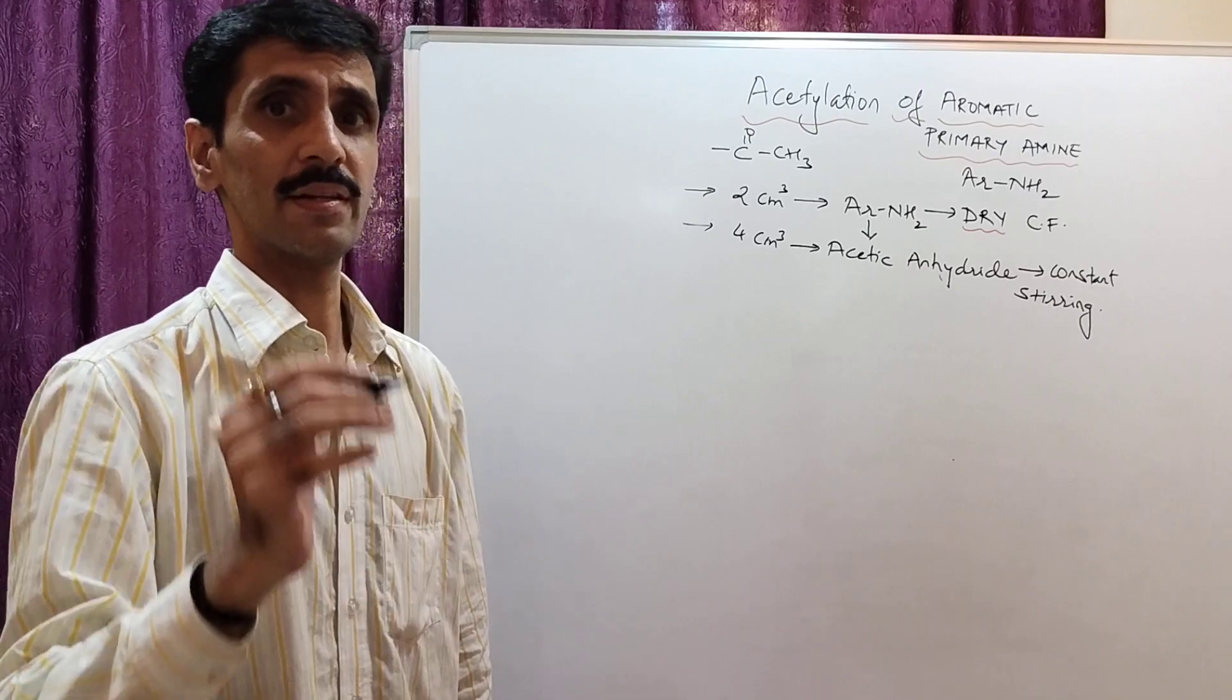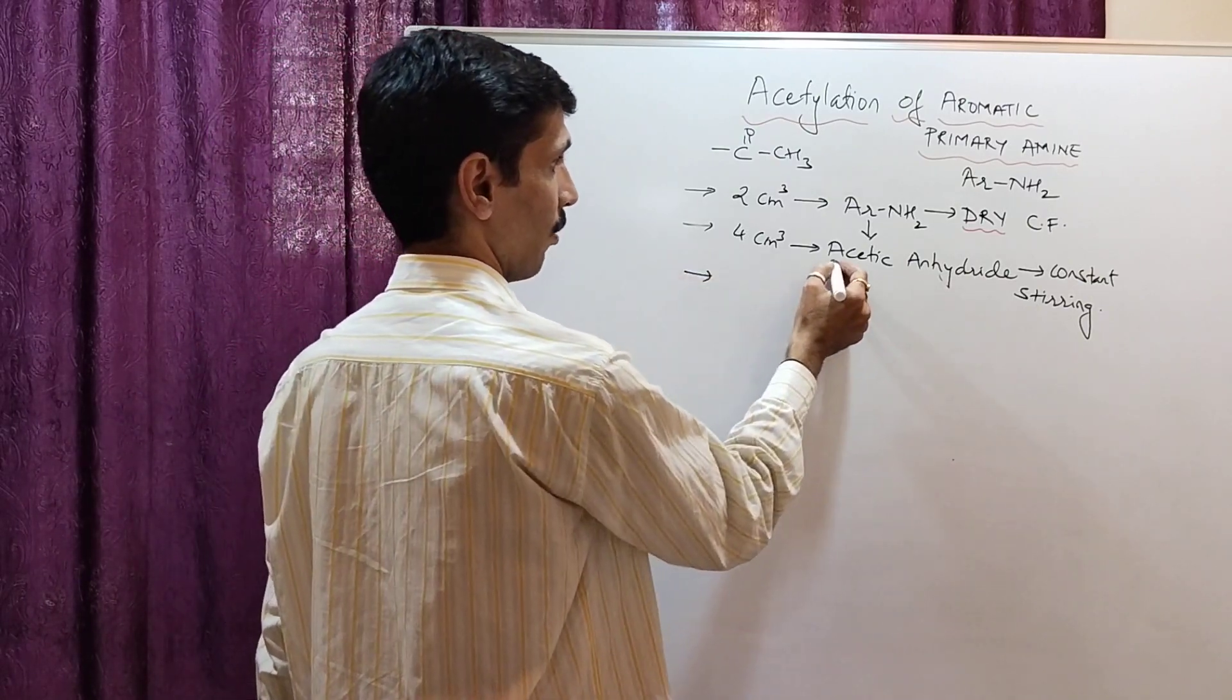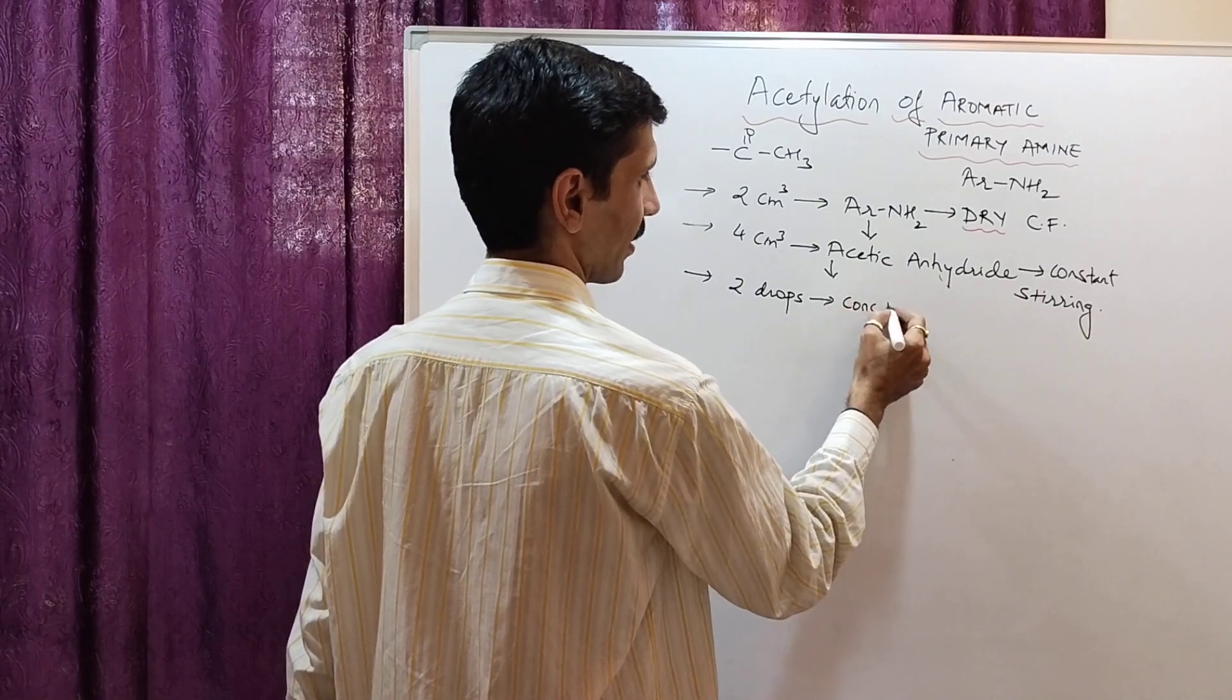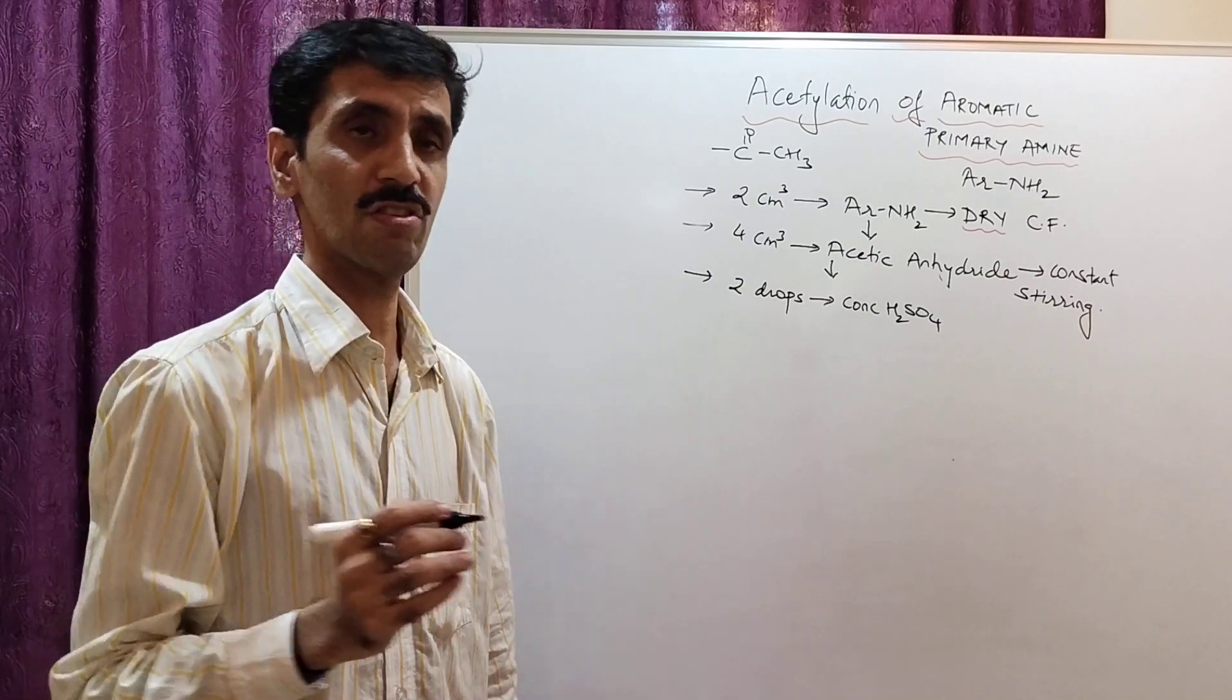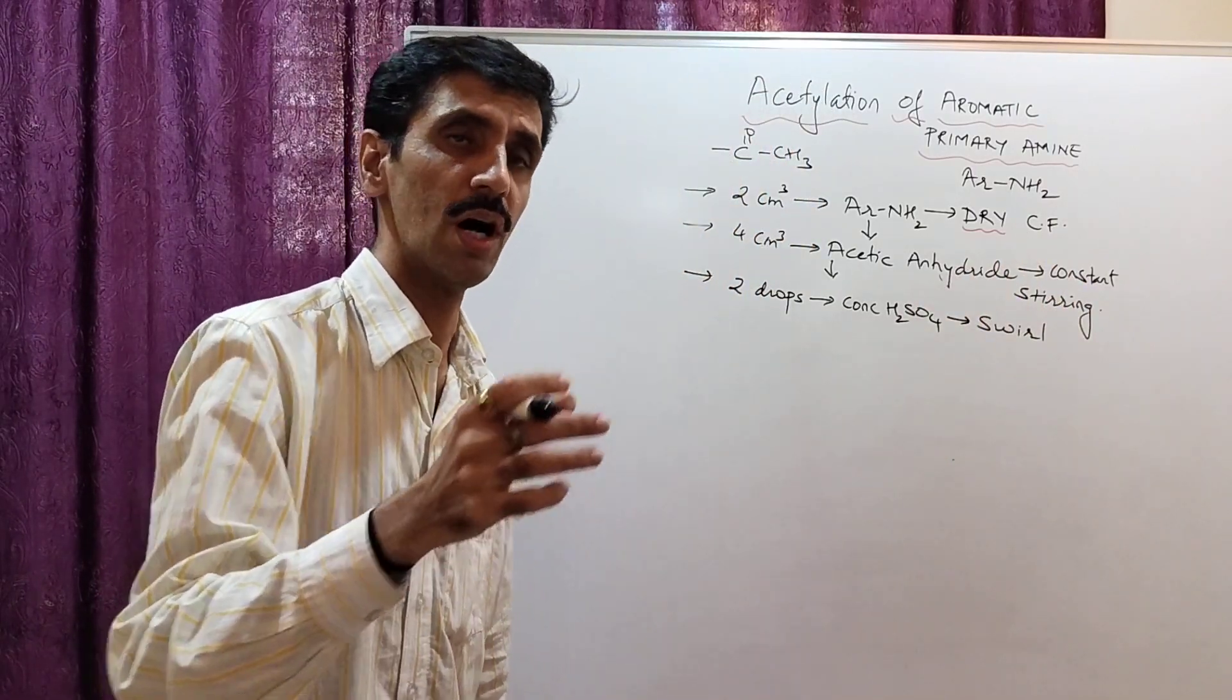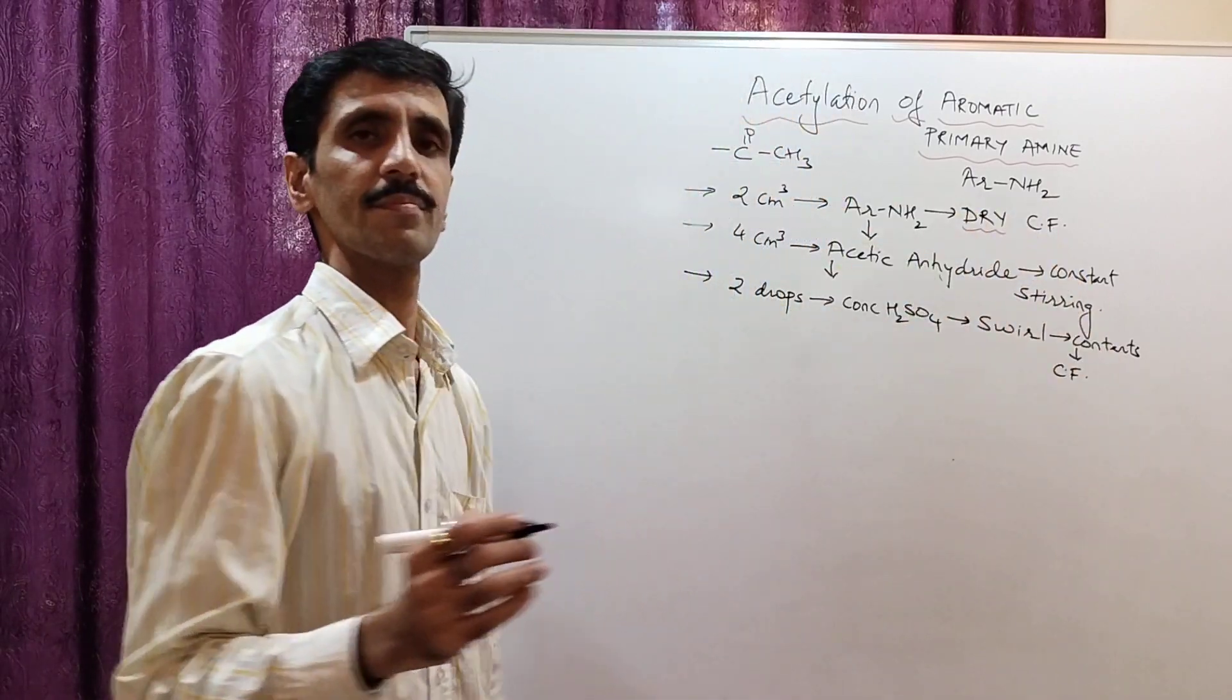Next thing is, the reaction takes place in an acidic medium. So we are using concentrated sulfuric acid. Very, very cautiously, two drops of concentrated sulfuric acid has to be added into this conical flask. And very slowly swirl the contents of the conical flask.